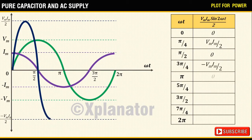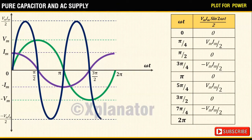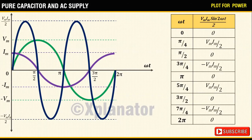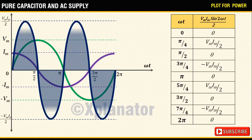The instantaneous power can be calculated at any point on the graph. However, the average value of this wave will be 0 because if you notice, the positive areas are cancelling out the negative areas,